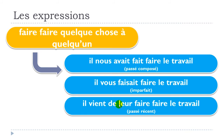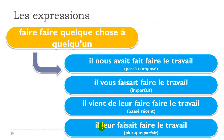For the passé récent with third person plural masculine, the pronoun is leur: il vient de leur faire faire le travail. For the plus-que-parfait, third person plural feminine — leur is the same for masculine and feminine: il leur faisait faire le travail. To recap: il nous avait fait faire le travail, il vous faisait faire le travail, il vient de leur faire faire le travail, il leur faisait faire le travail.